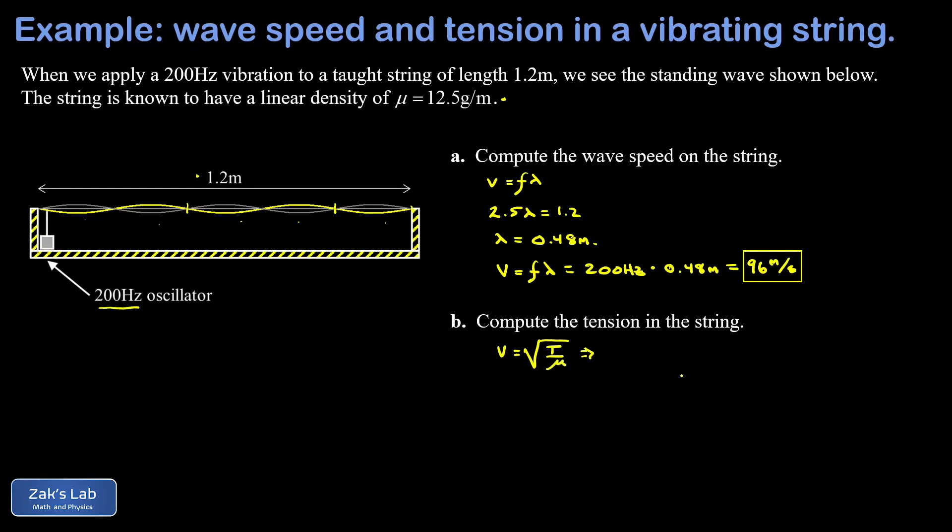Now we're trying to solve for T in this case. We have the wave speed and linear density, so we're going to square both sides and then solve for T. I'll start by writing v squared equals T over mu, and then we just multiply both sides by mu and we've solved for T. So T is equal to mu v squared.